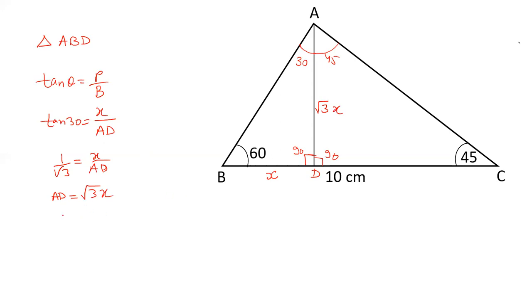Similarly, we can solve for AB using sin theta in the same triangle. Sin theta equals P over H. Sin 30 equals x over AB. Since sin 30 equals 1/2, AB length is 2x.